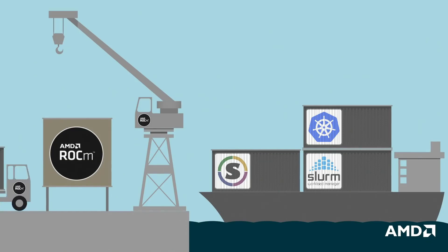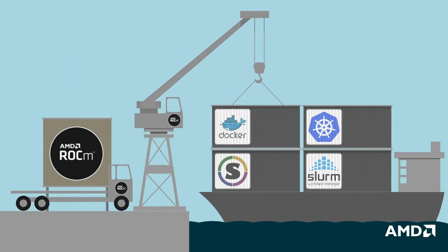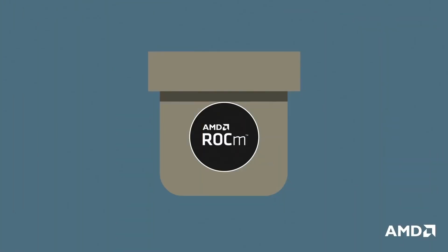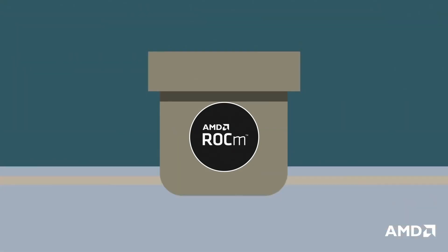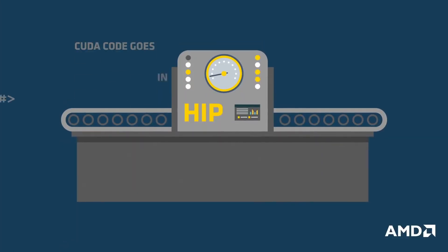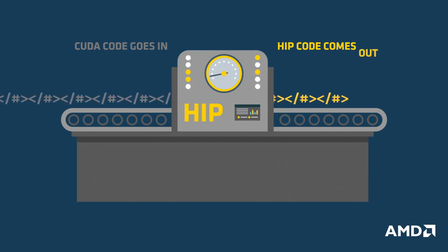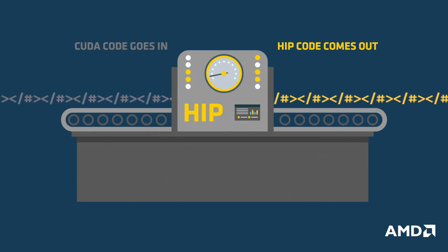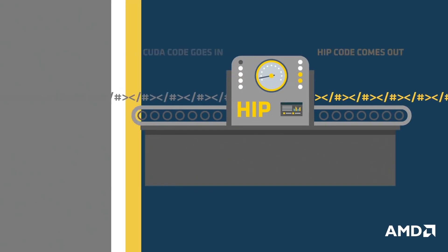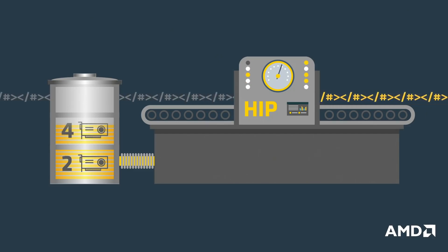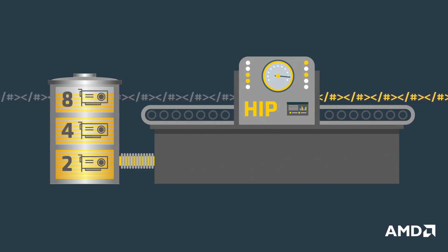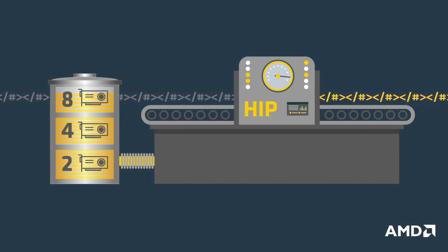ROCm also supports the industry's latest container workload deployment methods such as Docker, Singularity, Kubernetes and Slurm. At the centre of the ROCm environment is a technology known as Heterogeneous Compute Interface for Portability, HIP. HIP allows you to create code that is ready to compile for either the AMD or NVIDIA CUDA GPU environment. ROCm's open HIP code works on multiple GPU or other accelerators so scientists, researchers or developers can easily target workloads at multiple architectures, allowing for maximum performance and efficiency.